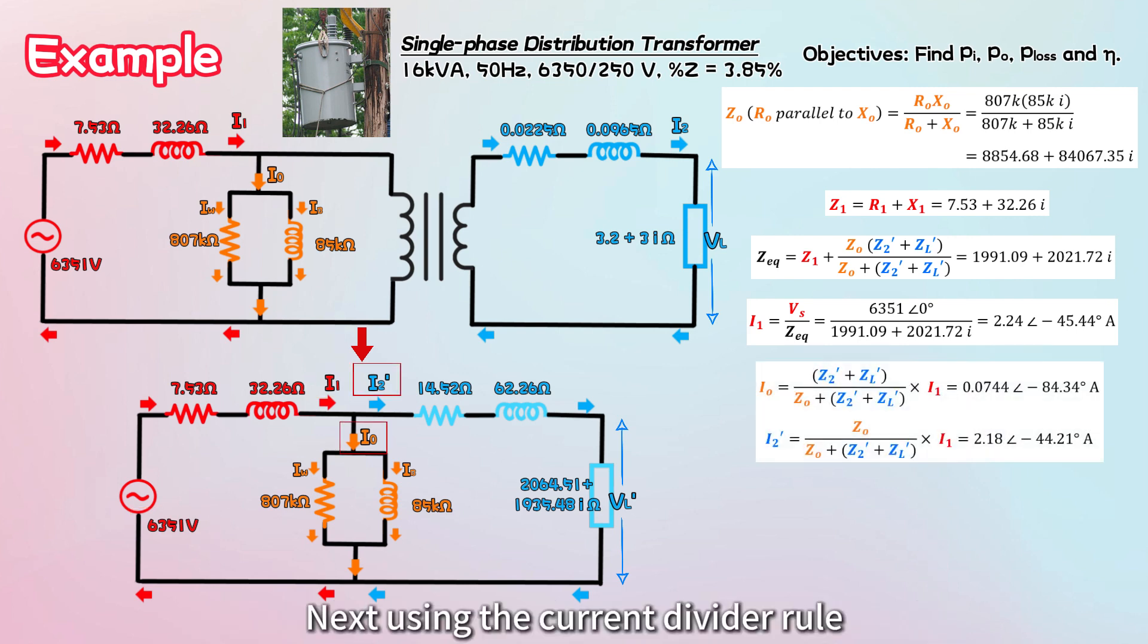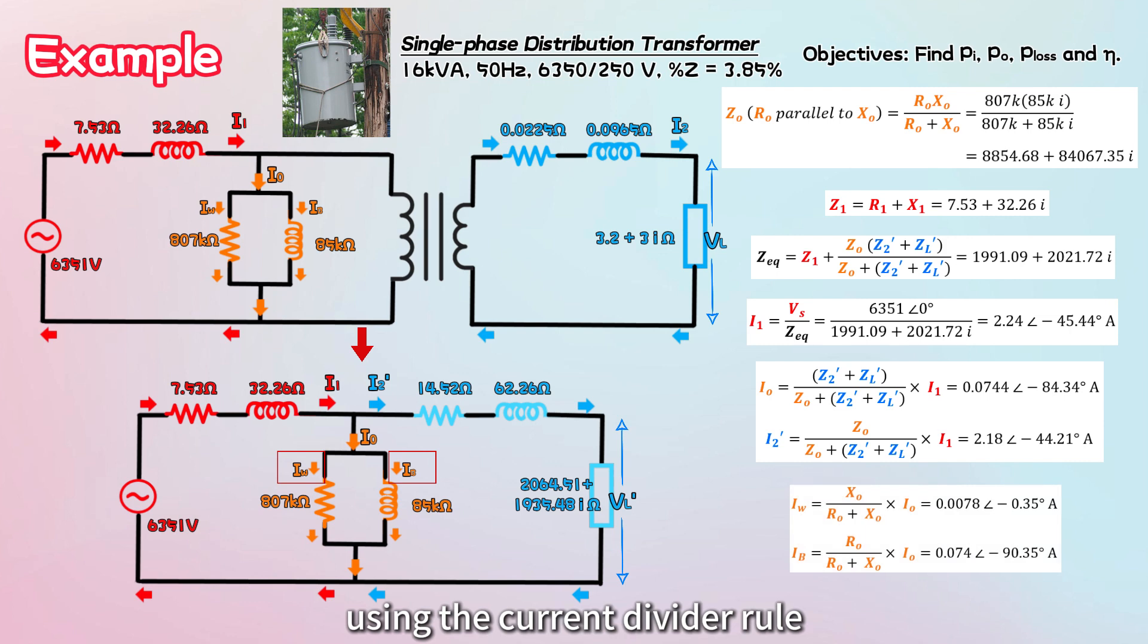Next, using the current divider rule, we can calculate the no-load current I0 and the reflected secondary current I2'. Using the current divider rule again, we can further decompose I0 into IW and IB.